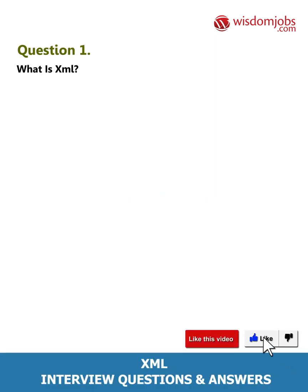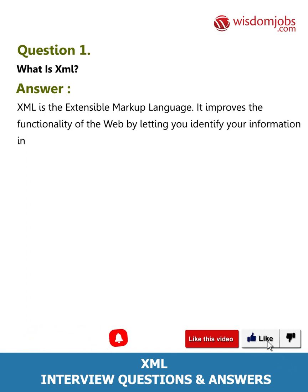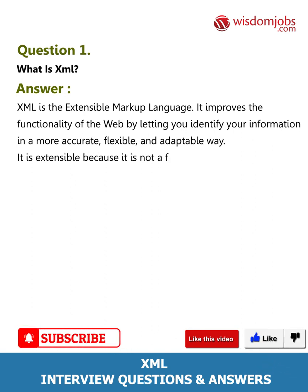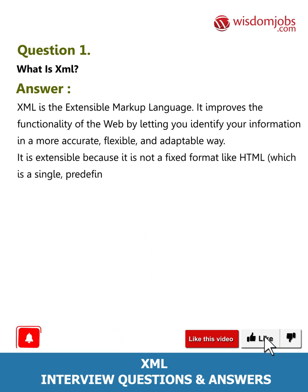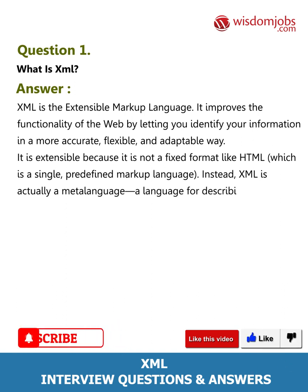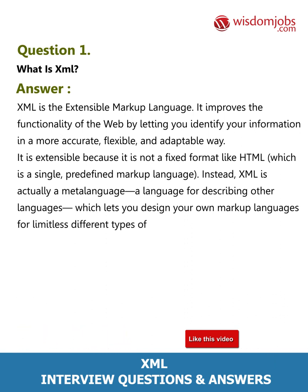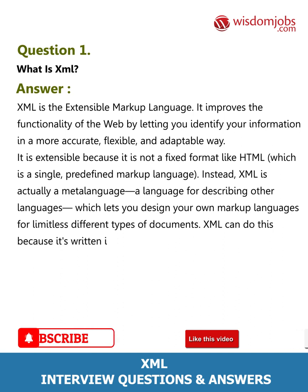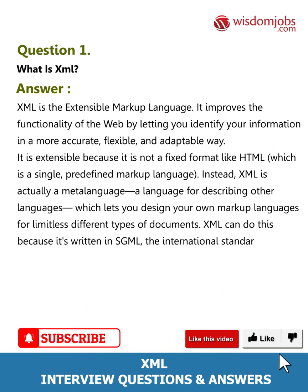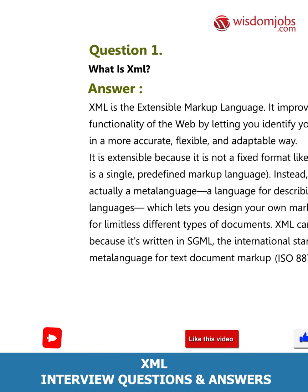Question 1: What is XML? Answer: XML is the Extensible Markup Language. It improves the functionality of the web by letting you identify your information in a more accurate, flexible, and adaptable way. It is extensible because it is not a fixed format like HTML. Instead, XML is a meta language — a language for describing other languages — which lets you design your own markup languages. XML can do this because it's written in SGML, the international standard meta language for text document markup, ISO 8879.